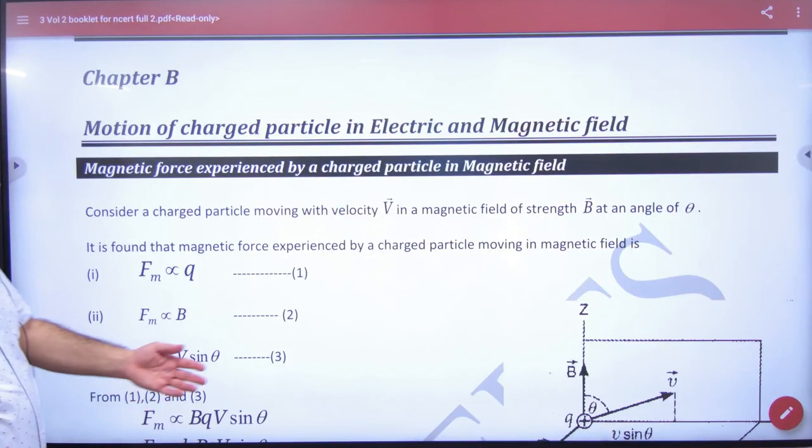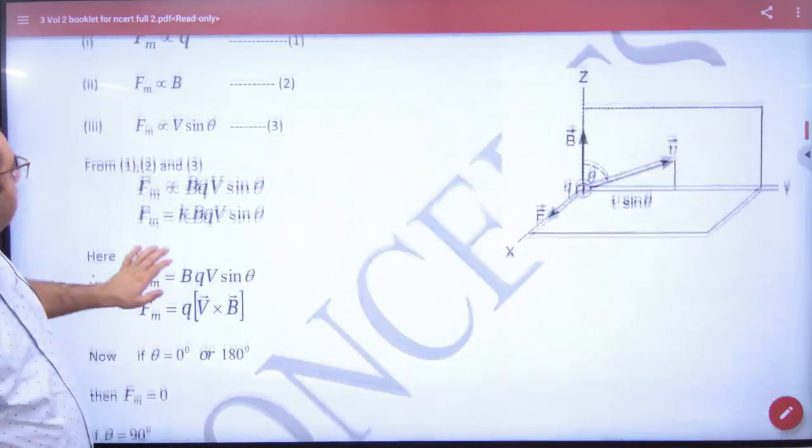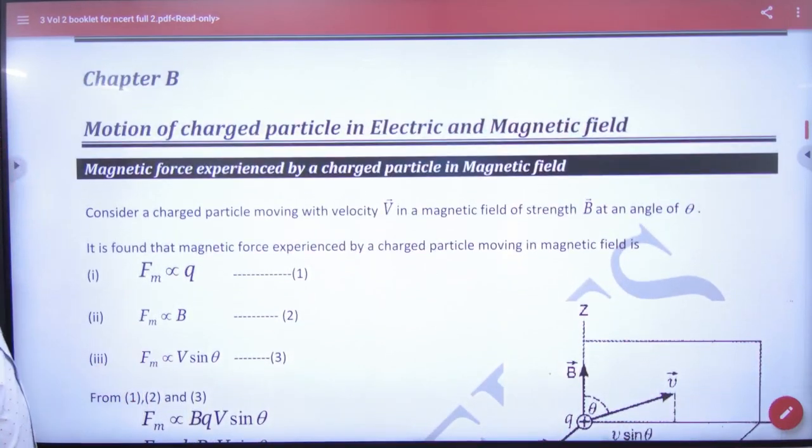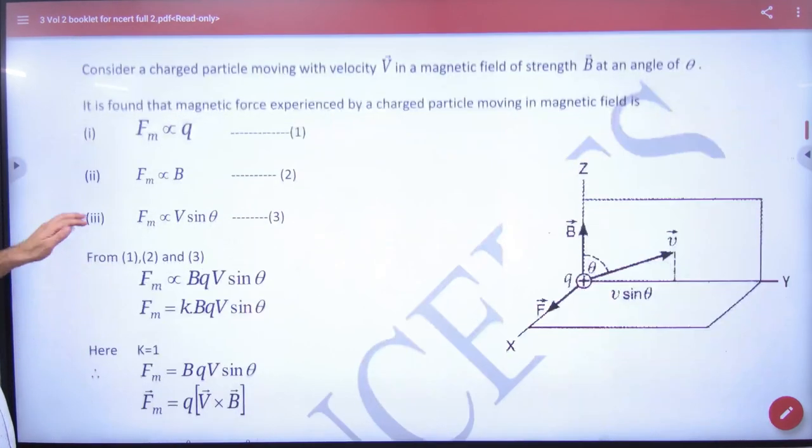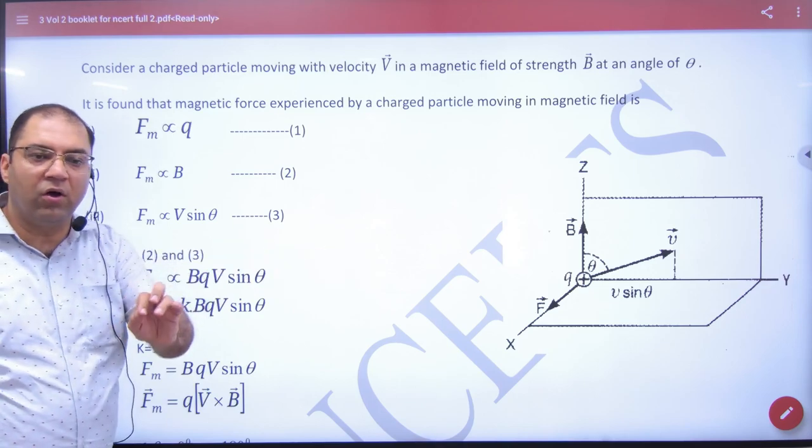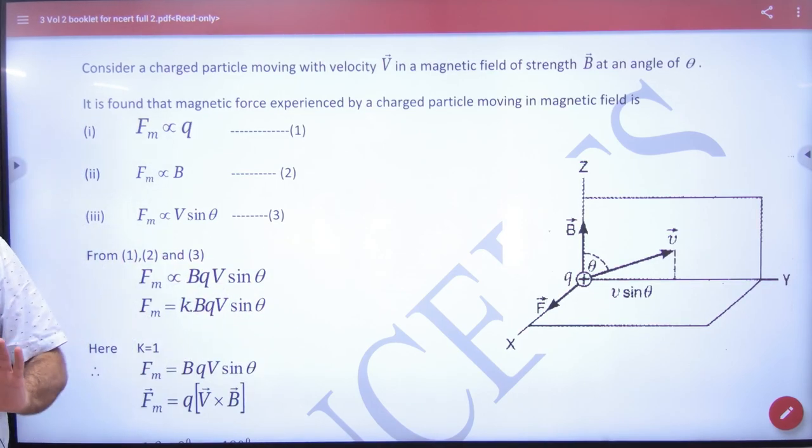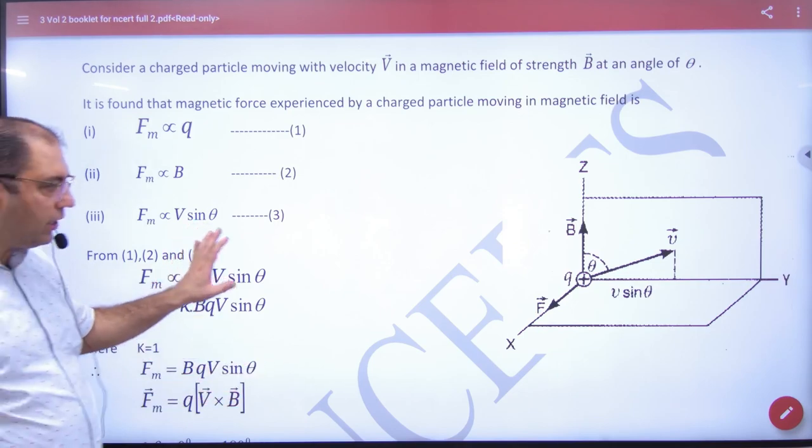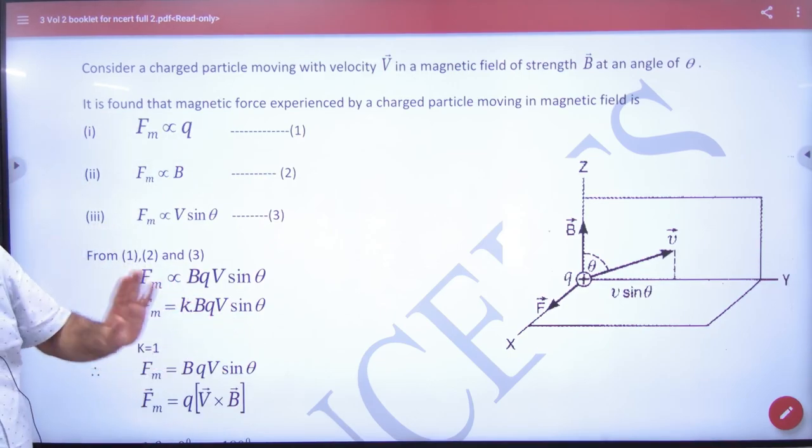NCERT booklet open, page number 46. When the chapter starts, it starts with a force formula, bqb sin 90. Already done in handwritten sheets or notes, so there is no need to do it from here. Already done or refer handwritten booklet, so cross it.